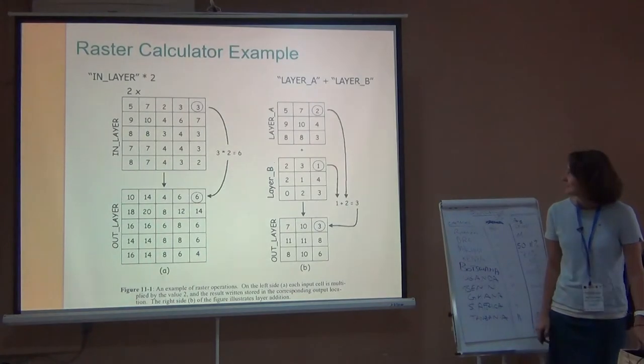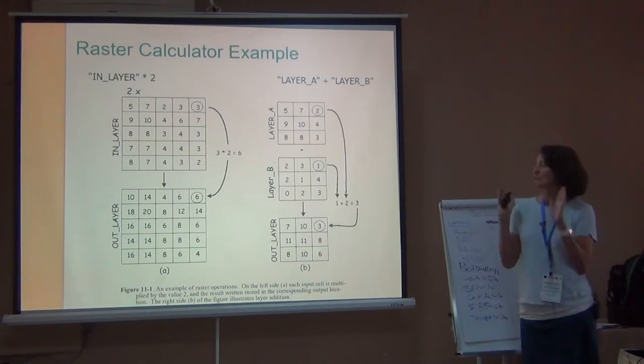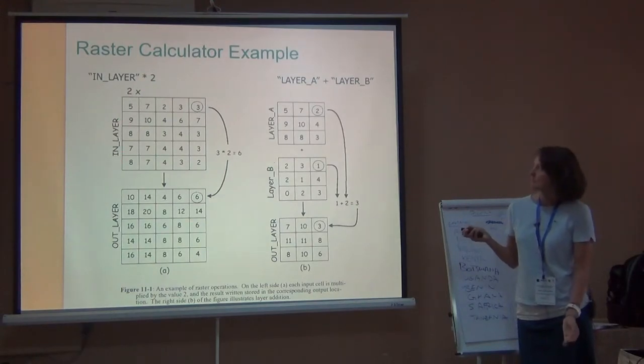So here's just a straightforward example with a five by five, so 25 pixel landscape. And you're asking for this in-layer raster, that's the name of that raster, and you're asking for multiplied by two. So notice you do three times two equals six. Seven times two equals fourteen, et cetera.